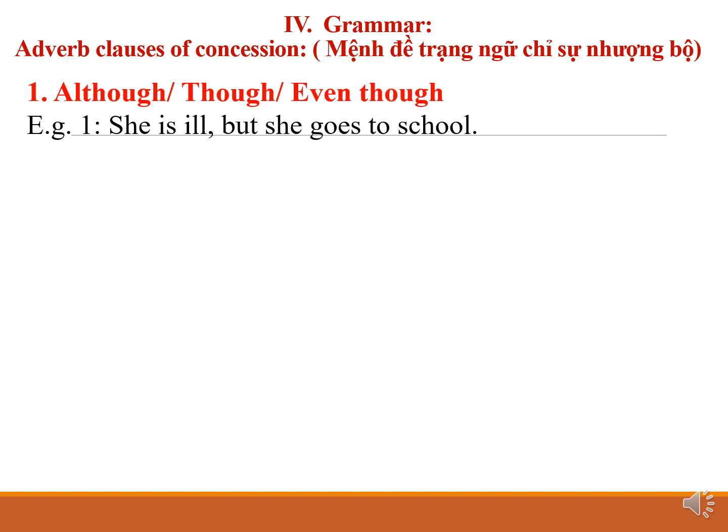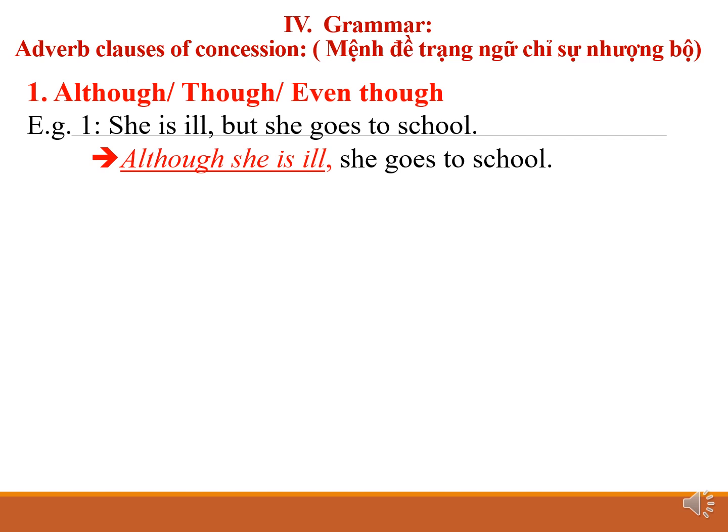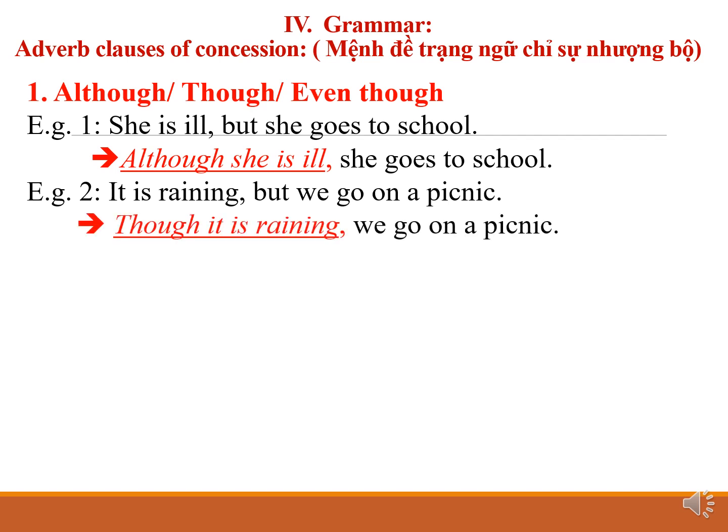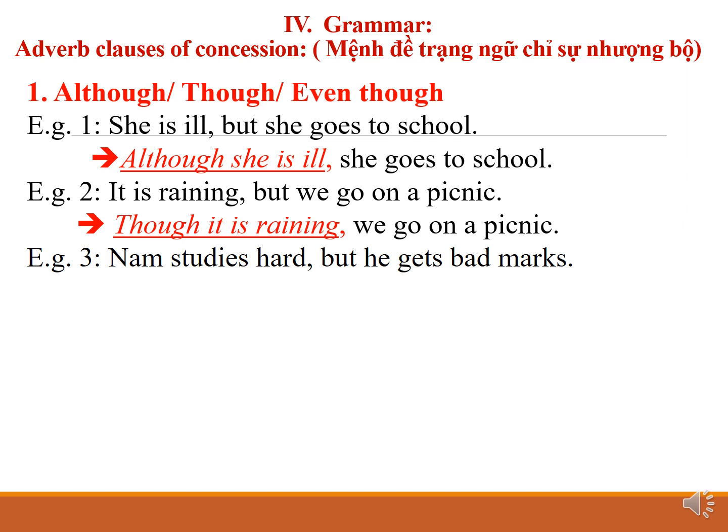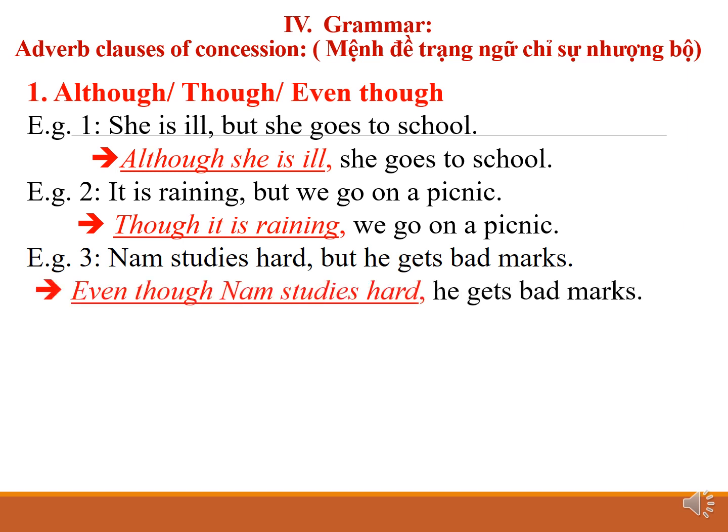Example 1: She is ill, but she goes to school. Rewritten using although: Although she is ill, she goes to school. Example 2: It is raining, but we go on a picnic. Using though: Though it is raining, we go on a picnic. Example 3: Nam studies hard, but he gets bad marks. Using even though: Even though Nam studies hard, he gets bad marks.